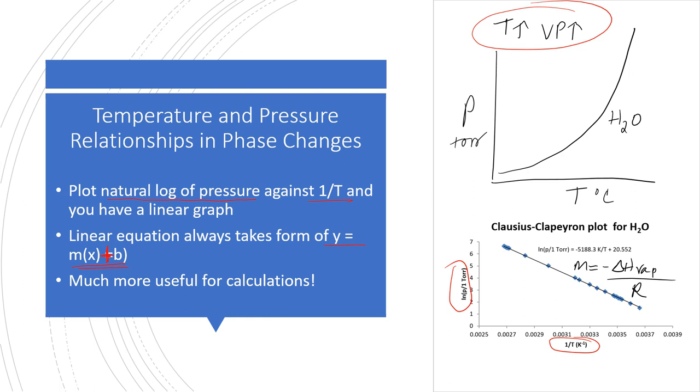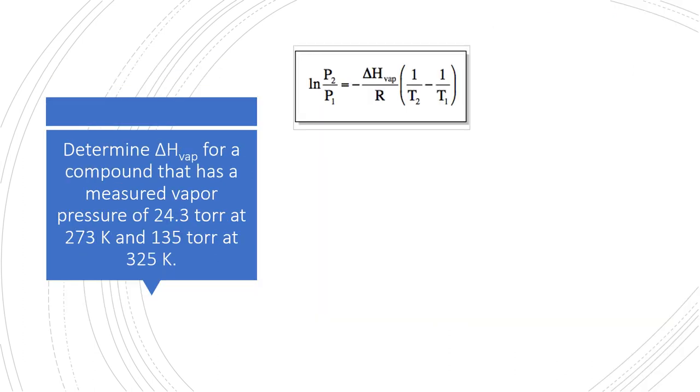So now we're going to put this equation to work by doing what else? By doing a problem. We have a problem here, and it's asking us to solve for the delta heat of vaporization. Don't say you weren't warned.